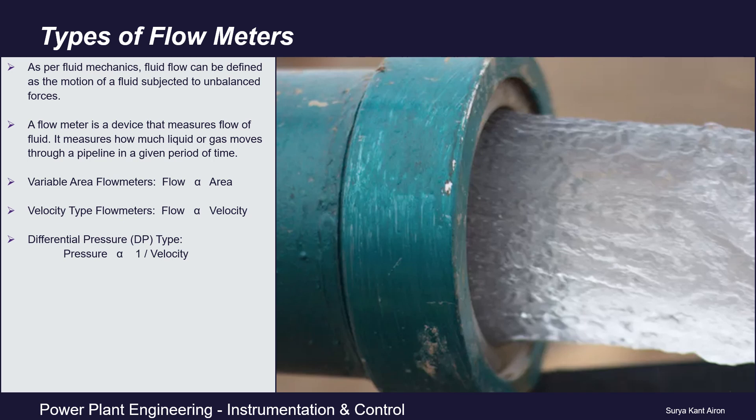Flow is equal to cross-sectional area multiplied by velocity — that is, the flow rate of a fluid equals the product of the cross-sectional area of the pipe and the average velocity of the fluid. This tells us about a direct proportionality between flow and velocity. This principle gives birth to velocity-type flow meters such as ultrasonic and electromagnetic flow meters. Also, since flow is directly proportional to area, this principle is used in variable area flow meters, that is, rotameters.